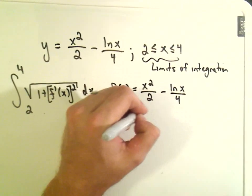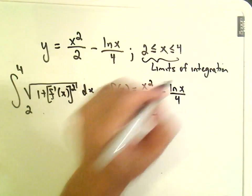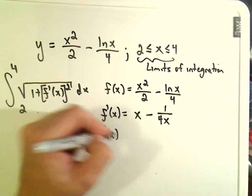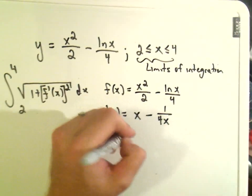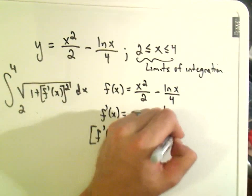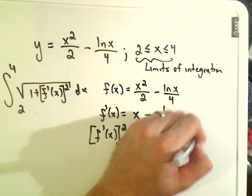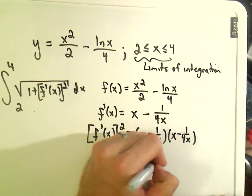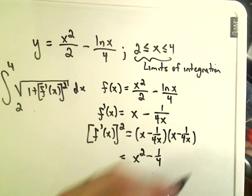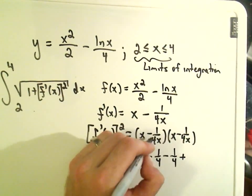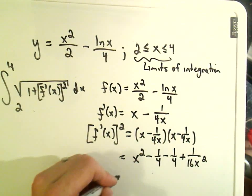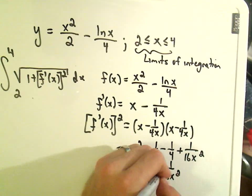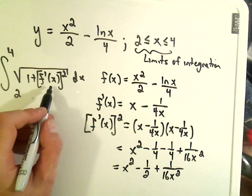It's very mechanical. Just take the derivative, we'll get 2x over 2 or just x. Remember the derivative of ln of x is 1 over x, so we'll get 1 over 4x. If I take the derivative and square that, I have to foil it out. Be careful here with your algebra. x and x is x squared. We'll get x times 1 over 4x, the x's will cancel, that'll leave us with negative 1 fourth. Same thing on the inside, the x's will cancel, we'll get minus 1 fourth. And then on the outside, we'll get a positive 1 over 16x squared. That gives us x squared minus 1 half plus 1 over 16x squared.